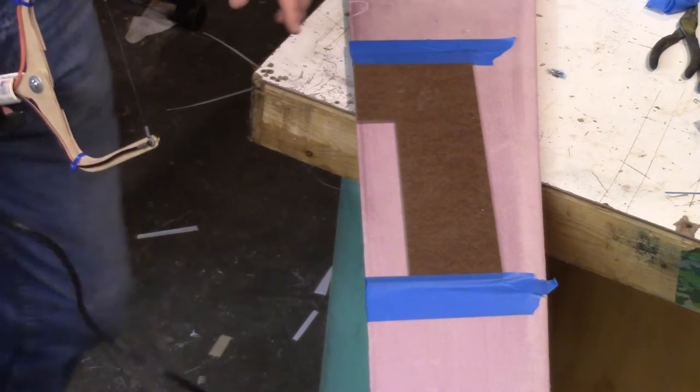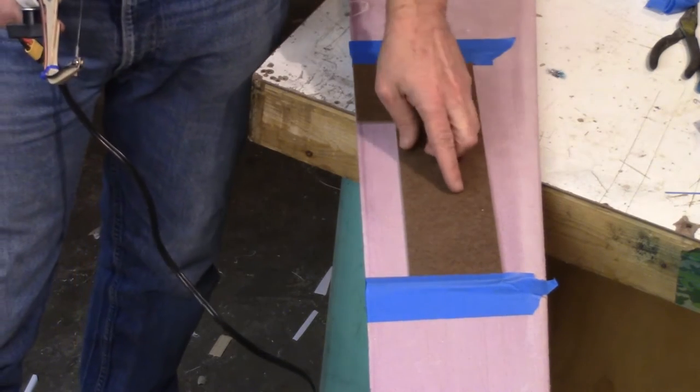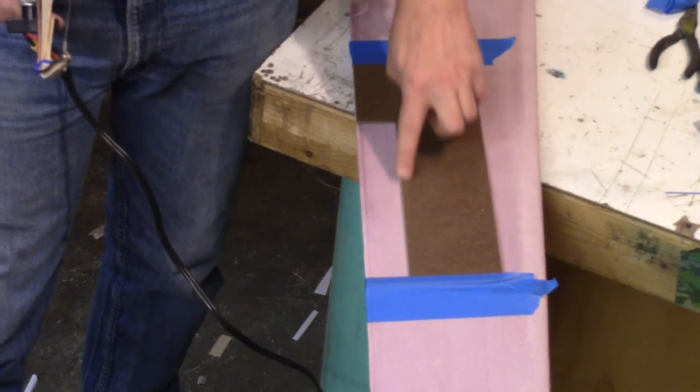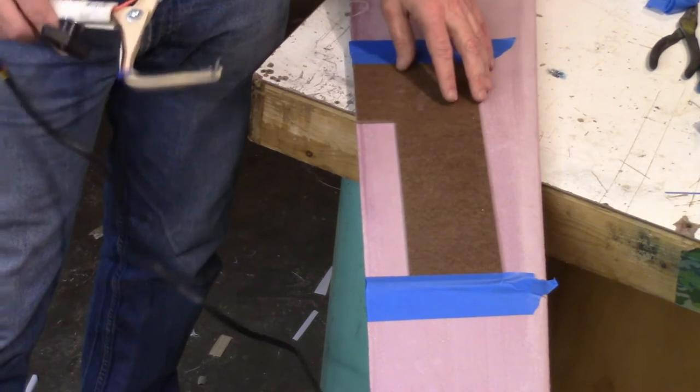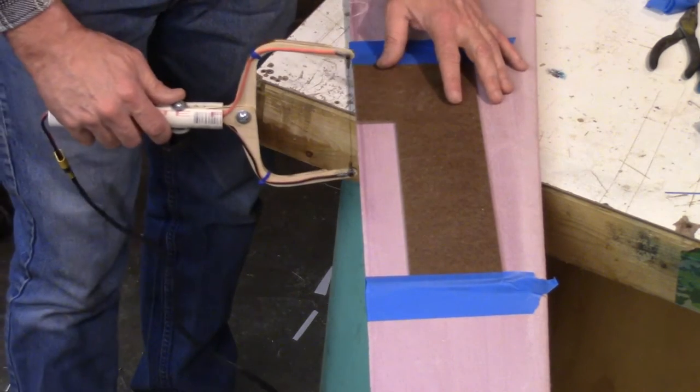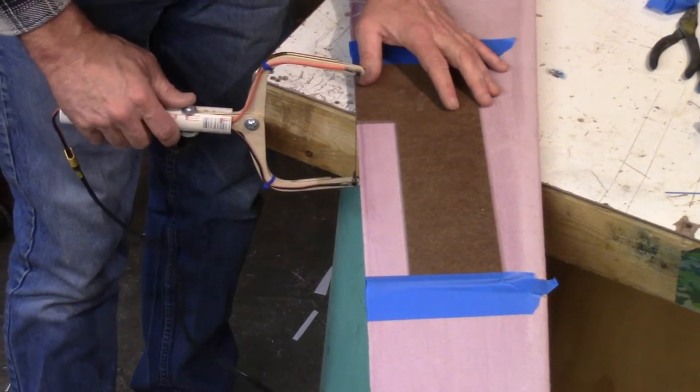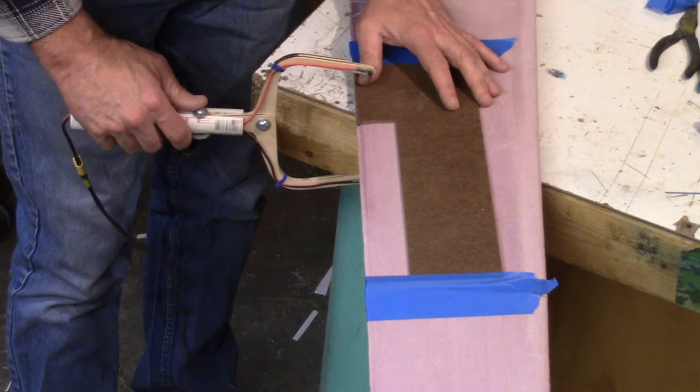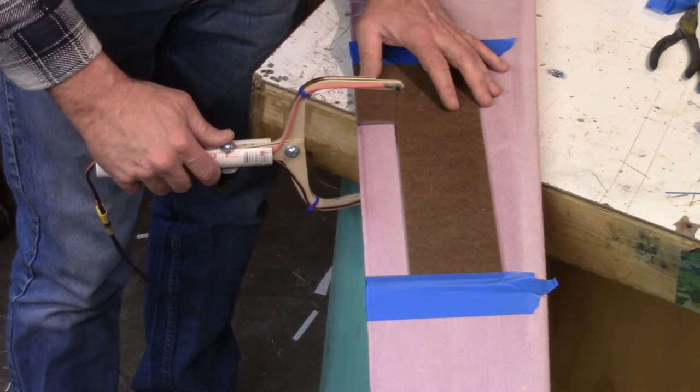I have it connected to my 12-volt power supply and what I plan on doing is just following the edges of this hardboard template that I've made. I just want to follow the inside edge around until it cuts out the pocket for the aileron.